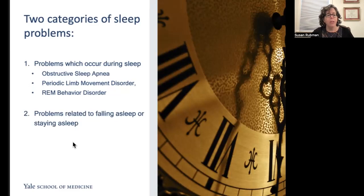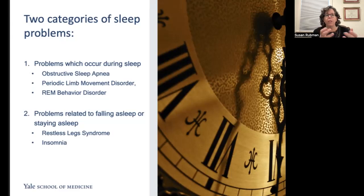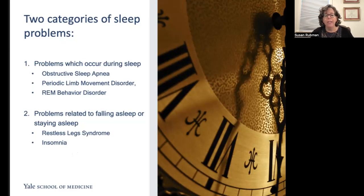Problems related to falling asleep or staying asleep take two forms. The first is restless leg syndrome — unlike periodic limb movements, which occur only during sleep, restless legs occurs only when we're awake. It's an uncomfortable sensation in the legs that feels like something crawling on or under the skin, only relieved by movement, and it disrupts falling asleep. Individuals may need to get up and walk around or stretch to make the sensation subside. And finally, insomnia, which we'll discuss in more detail shortly.